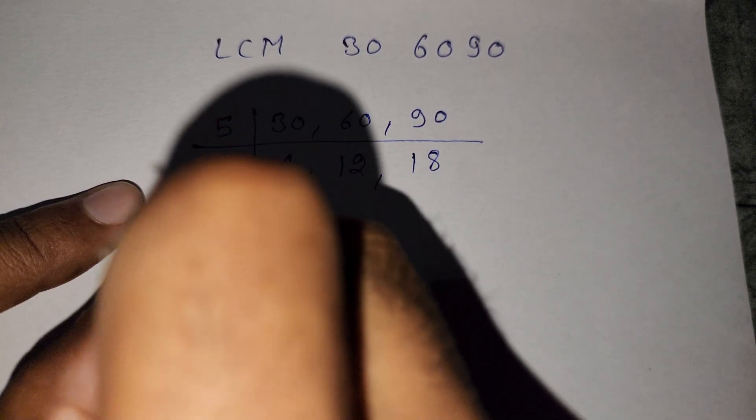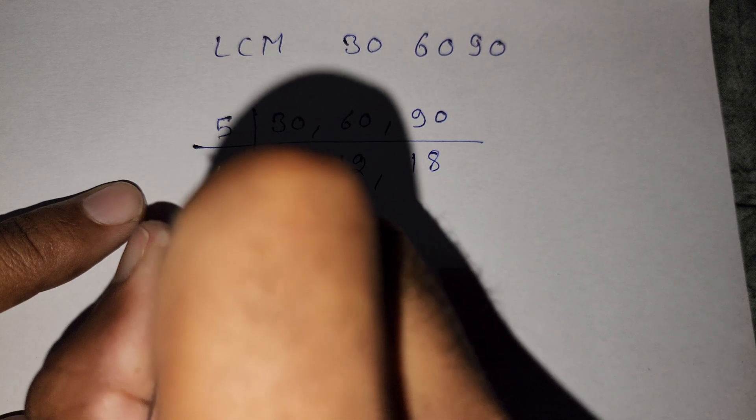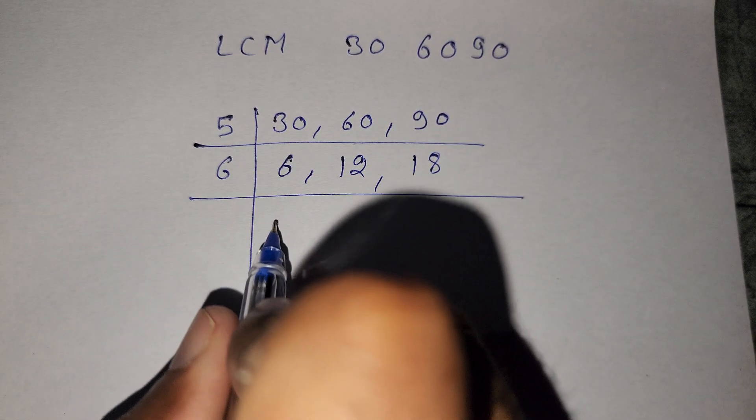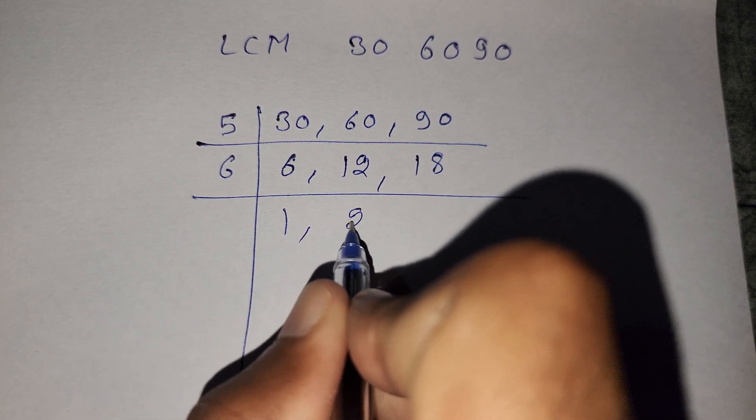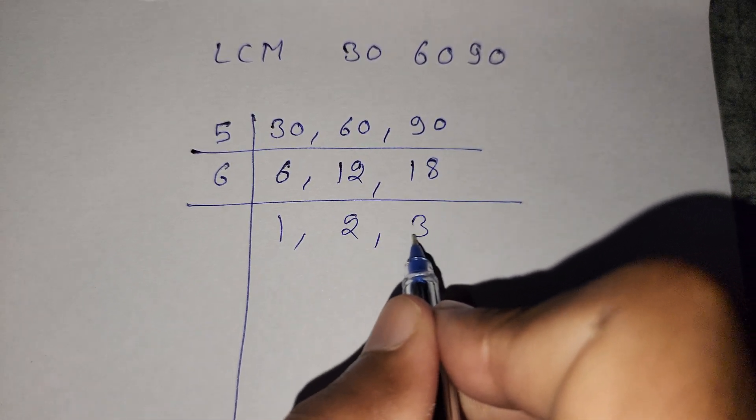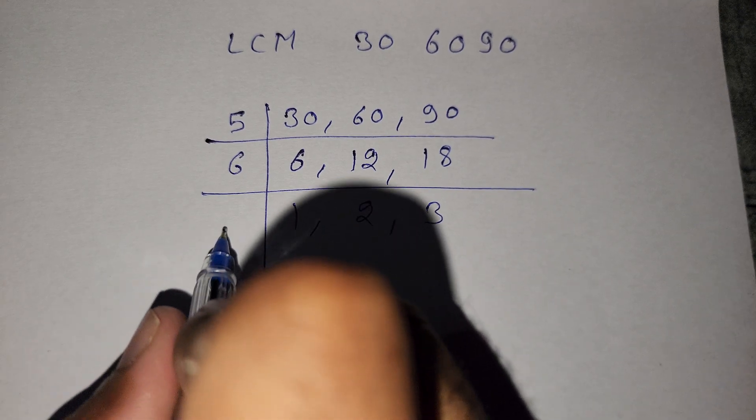Now we divide by 6, because 6 times 1 is 6, 6 times 2 is 12, and 6 times 3 is 18.